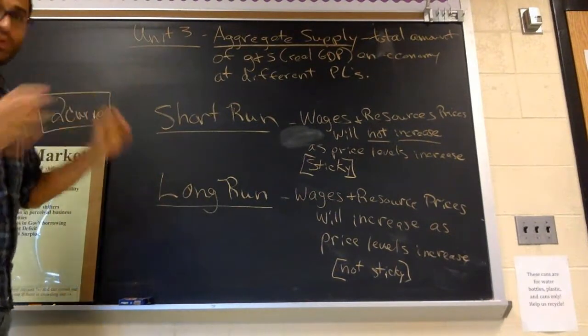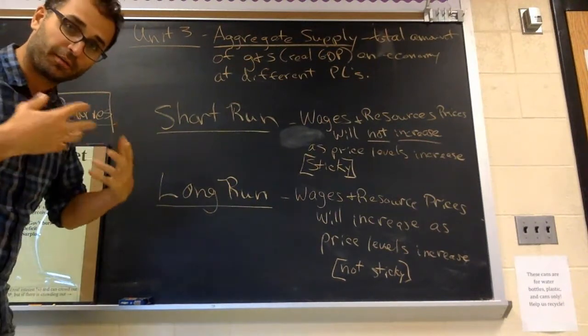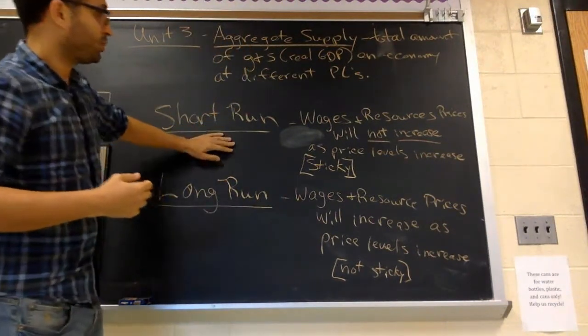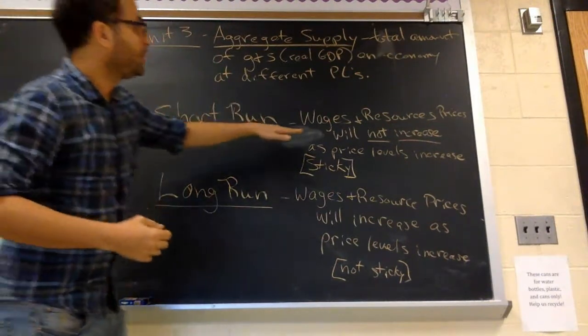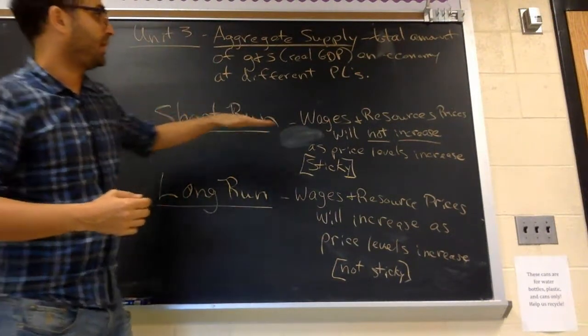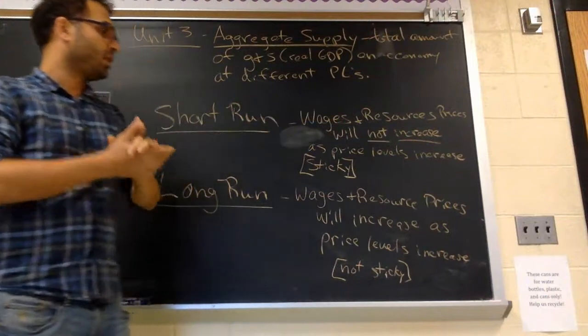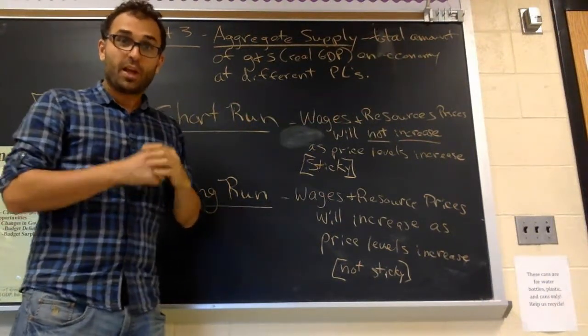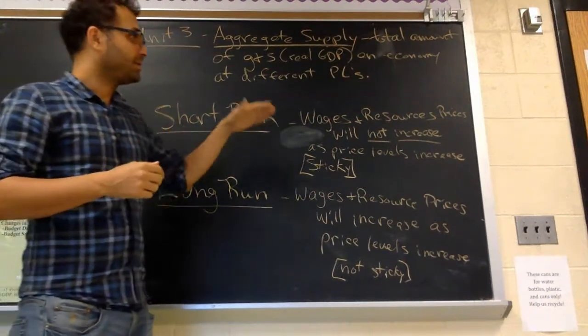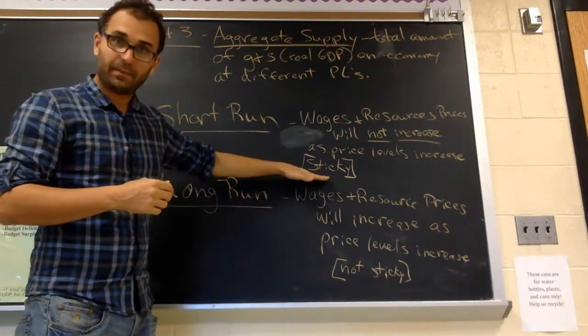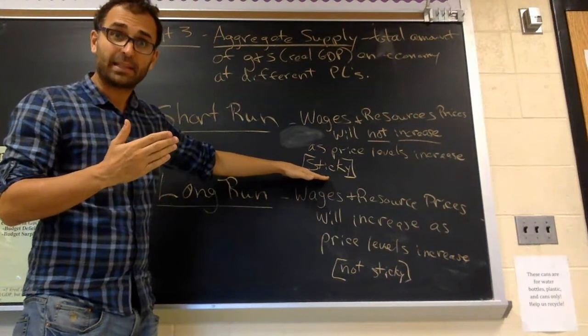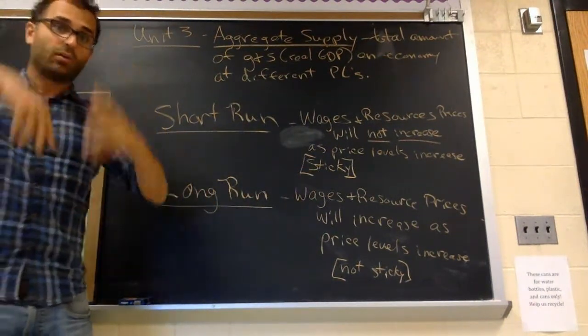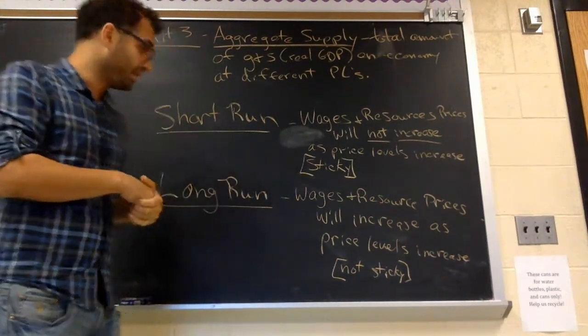So let's start with the short run. Short run is the most basic one, and the curve looks like the one you saw before, upward sloping. So what happens in the short run? Please write this down, super important. In the short run, aggregate supply, wages and resource prices will not increase as price levels increase. In other words, wages and resource prices are sticky. That's literally the term that Keynes came up with. Wages and prices are sticky. They don't change right away. They only change in the long run, which we'll see.